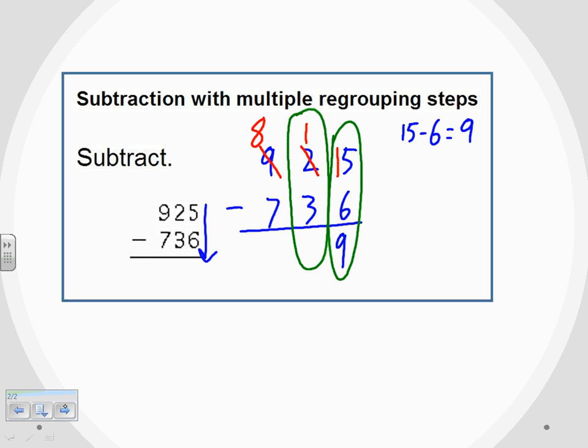So that 9 becomes 8. The 1 that I took away from the 9 gets carried over here and just put in front of that 1, so that now I have 11 minus 3. And again, I fixed the problem because 11 minus 3, that I can do, that gives me 8.